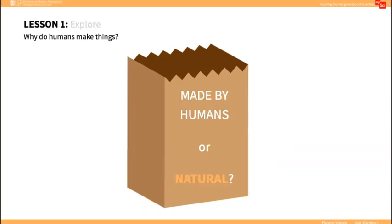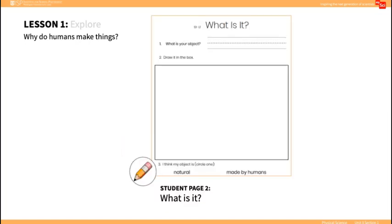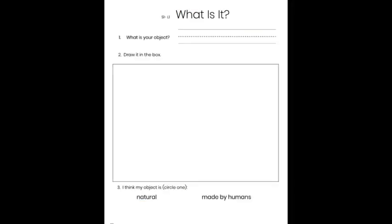In the Explore, organize students into small groups, giving each group one item from the bag. Ask students to decide if the object was made by humans or is a natural object. You may want to tell students that a natural object is one that they can find in nature and does not have to be made.